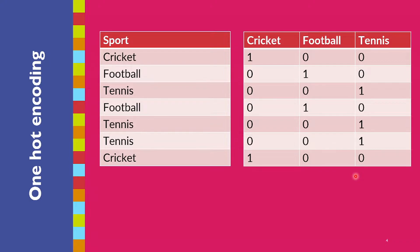The values are: cricket, football, tennis, football, tennis, tennis, cricket. What we do is create one column for each unique value: cricket, football, tennis. Whenever that value occurs — like cricket — it becomes one-hot, meaning a one is placed there and the others are zero. Similarly, for football the one occurs in the football column, and for tennis it occurs as one in the tennis column.